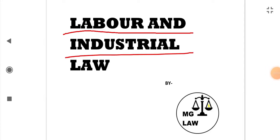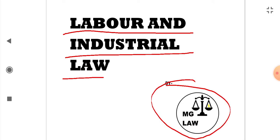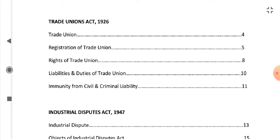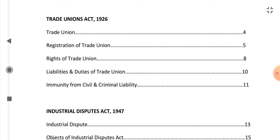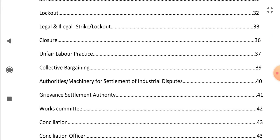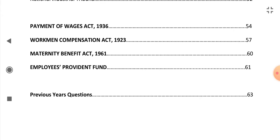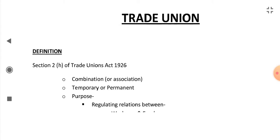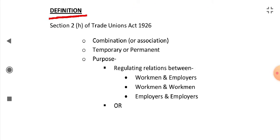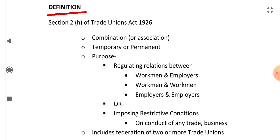Labor and Industrial Law by MG Law. The first topic we will cover is trade union under the Trade Unions Act 1926, on page number 4. Let's go to page number 4 — trade union. What is the definition of trade union according to Section 2h?